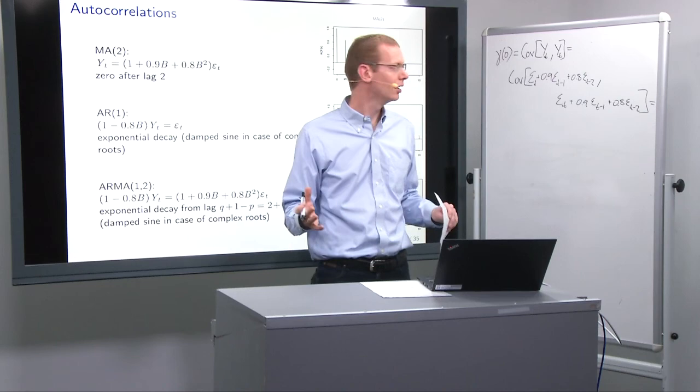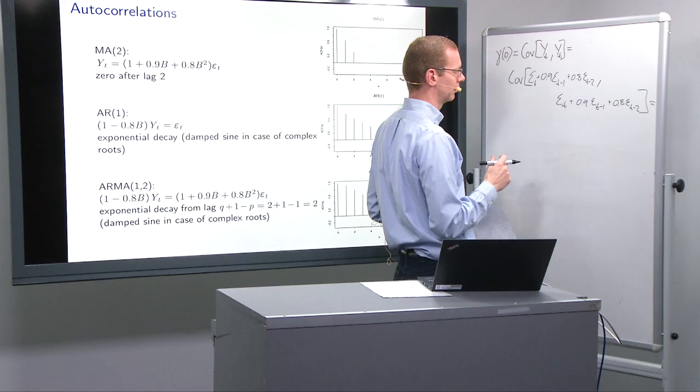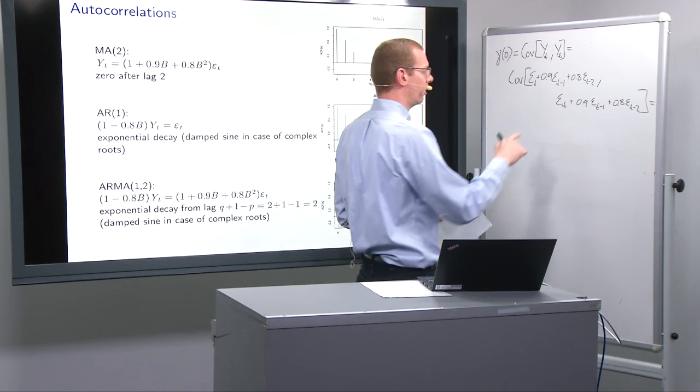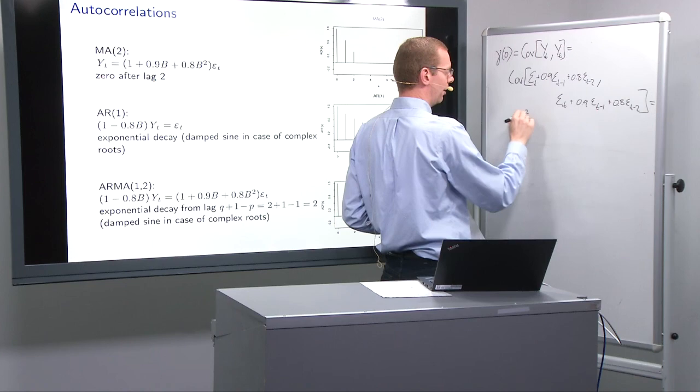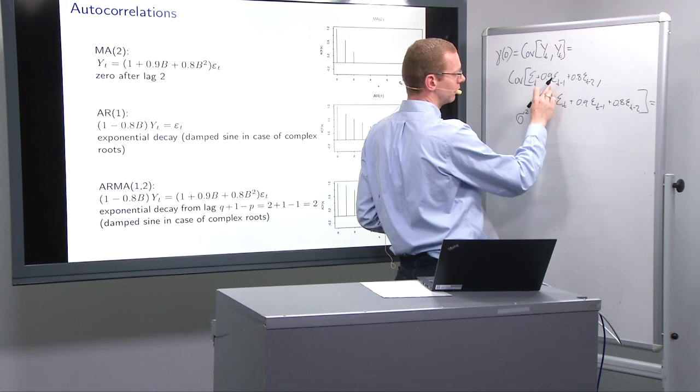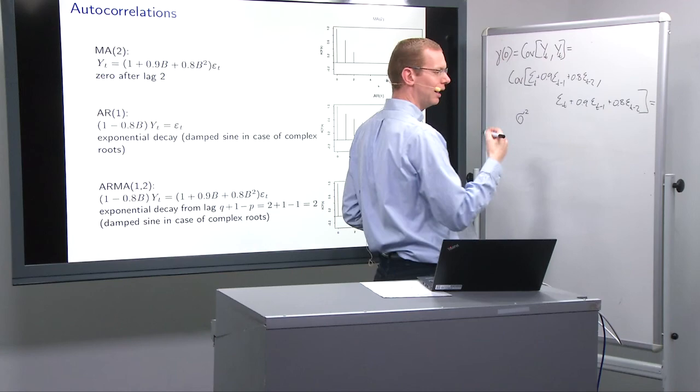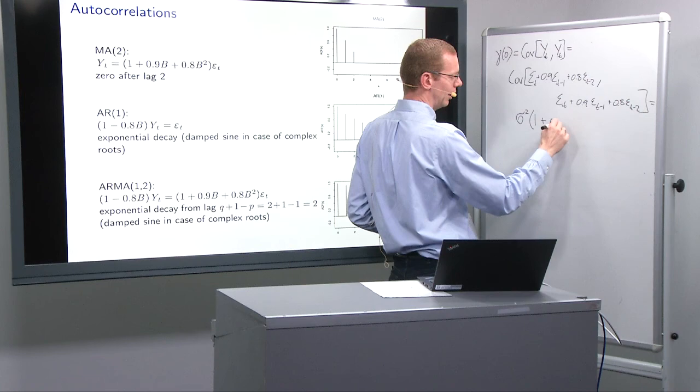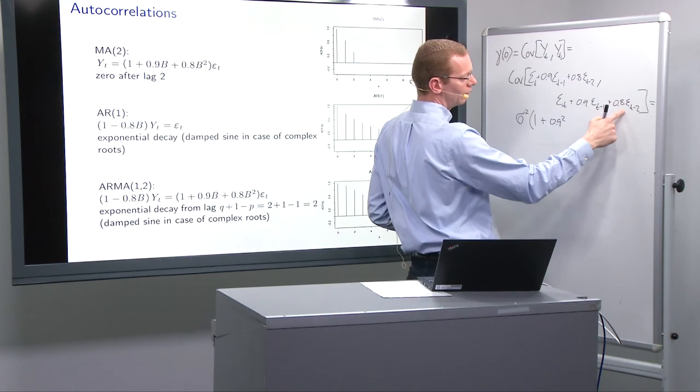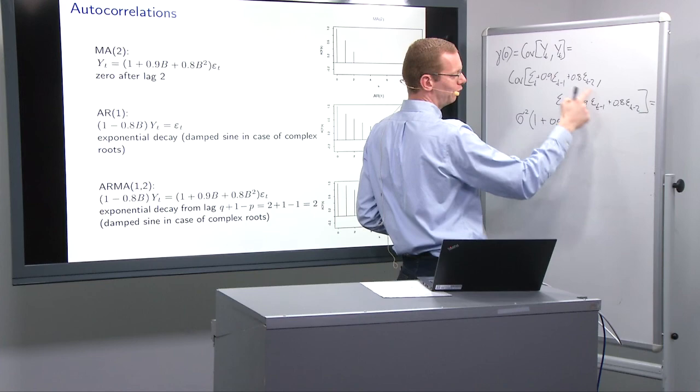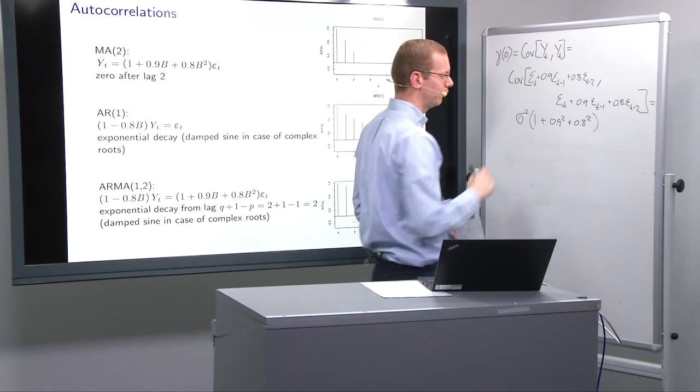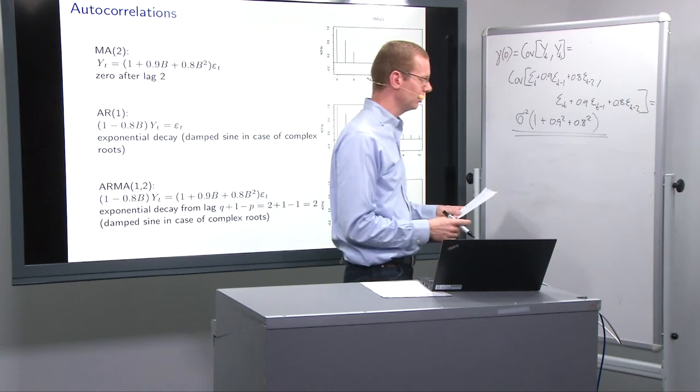Since all these epsilons are IID, we only get contributions from those elements that have the same time index. So, what we have here is effectively from epsilon T with epsilon T, we have a sigma square. From 0.9 epsilon T minus 1 times 0.9 epsilon T minus 1, we again have a sigma square. So, I will start with a 1 here and then I have a 0.9 square from this term here. Likewise, epsilon T minus 2 has a covariance with epsilon T minus 2 of 1. And then we have the coefficient 0.8 and we square them because they are in both parts. So, this is gamma zero.